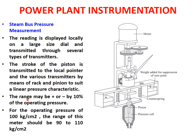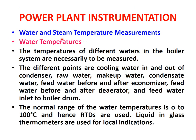The range may be plus or minus 10 percent of the operating pressure. For example, if the operating pressure is 100 kg per centimeter square, then the range of this meter should be approximately 90 to 110 kg per centimeter square.